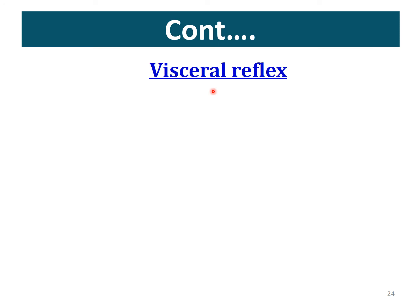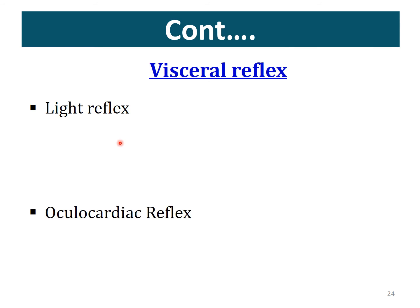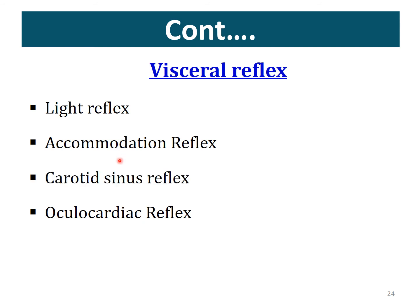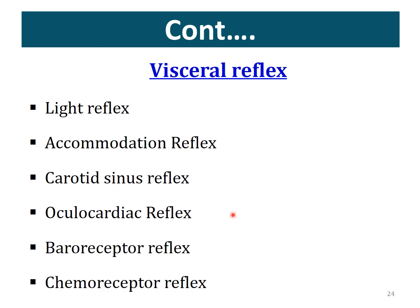The third clinical category is visceral reflexes. Examples include: light reflex — miosis (pupil constriction) in response to light; oculocardiac reflex; accommodation reflex; carotid sinus reflex; baroreceptor reflex; chemoreceptor reflex. These are all examples of visceral reflexes.